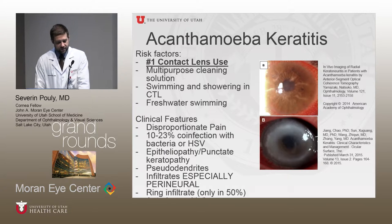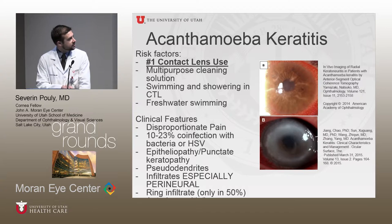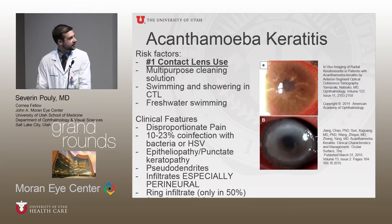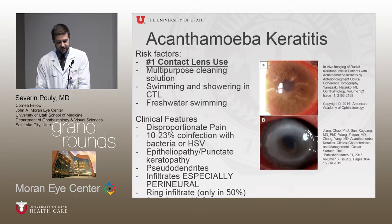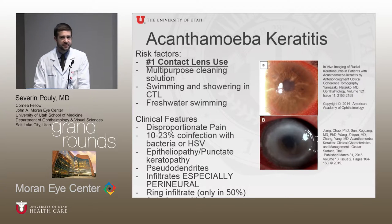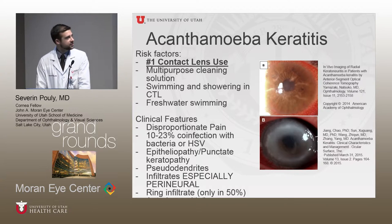There is the classic ring infiltrate, but that's only present in about 50% of patients with acanthamoeba keratitis infections. Poor prognostic factors include cataract formation if the infection extends posteriorly.